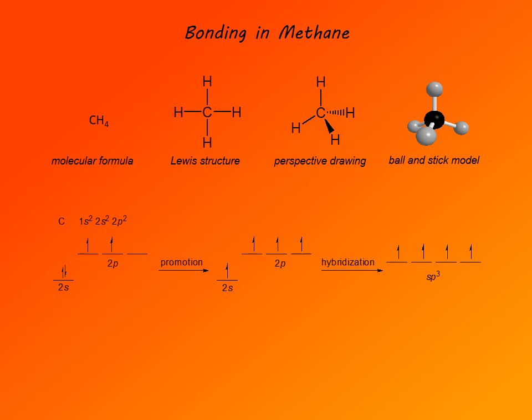Now we can examine bonding in alkanes using the simplest example — methane. Alkanes are a class of hydrocarbons that are saturated. Hydrocarbons means the compounds contain only carbon and hydrogen. Saturated means the valence requirements of carbon (which is four) are satisfied by carbon forming four single bonds. Methane, as the simplest alkane, has a molecular formula of CH4.